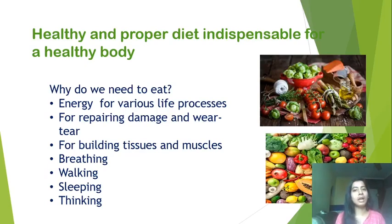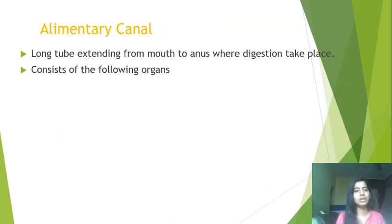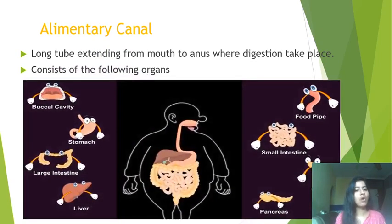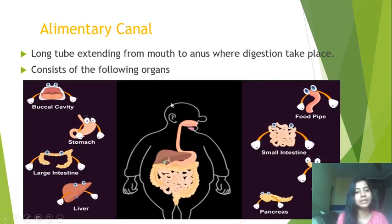Now let's start this journey of how digestion of food happens in your body. The alimentary canal is a long tube extending from mouth to anus where digestion takes place. It consists of the following organs: starting from the mouth and ending at the anus, it includes the buccal cavity, the pharynx, and the stomach, which is a J-shaped organ.